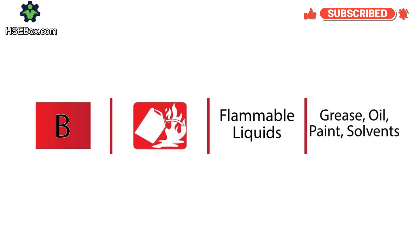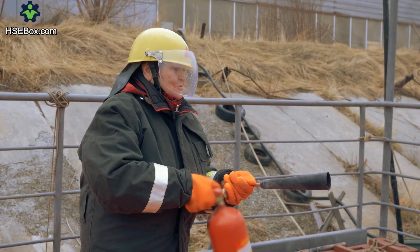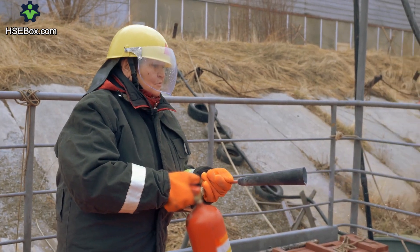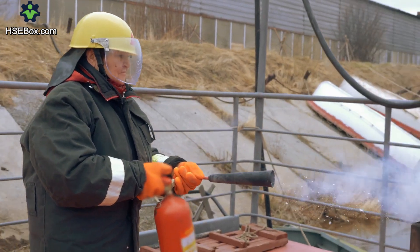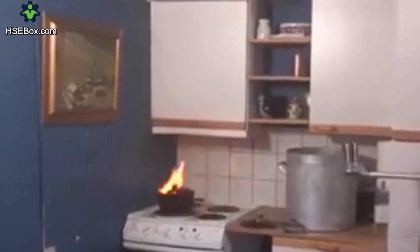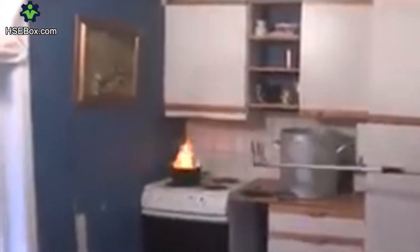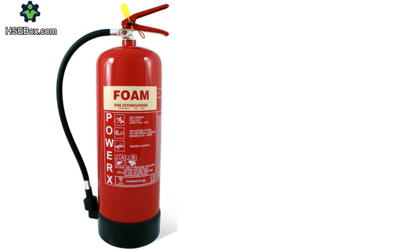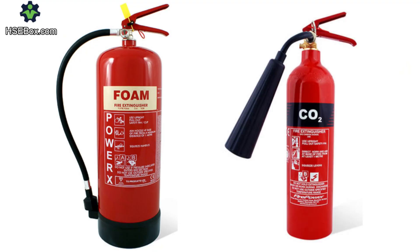Moving on to class B fires, these involve flammable liquids such as gasoline, oil, and paints. Class B fires are particularly dangerous because they spread rapidly, and using water to extinguish them can make things worse by causing the burning liquid to splash. For these fires, you need foam or carbon dioxide extinguishers.